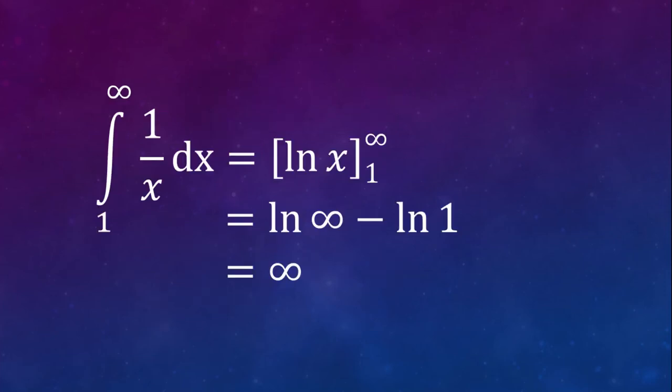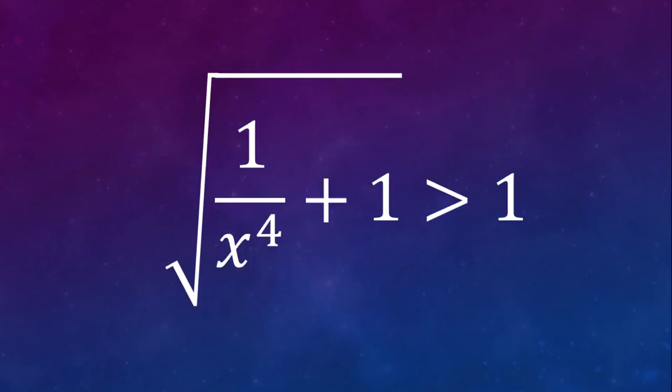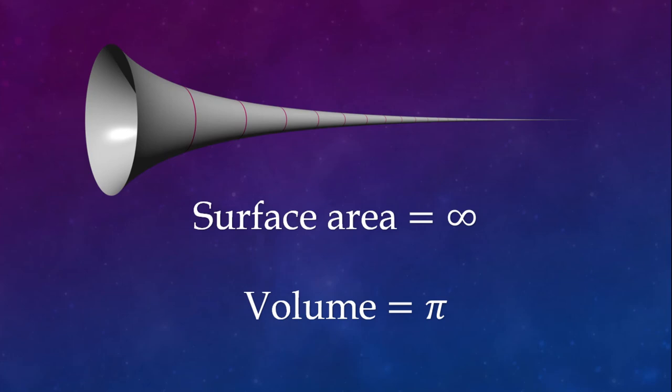So if we integrate the function 1 over x with respect to x, we get infinity. And as the square root of (1 plus 1 over x to the 4th) is always greater than 1, we can come to the conclusion that this integral diverges to infinity. Therefore, the surface area of Gabriel's horn is infinity.